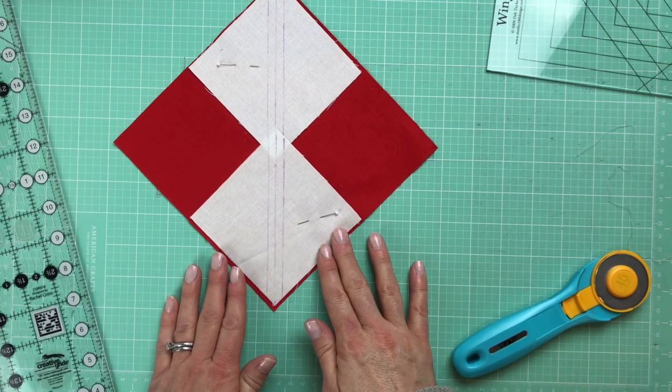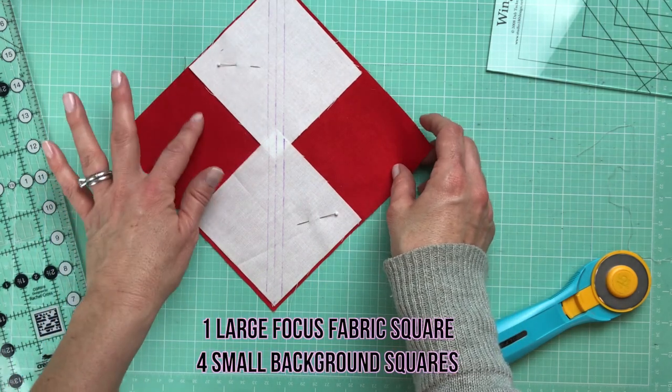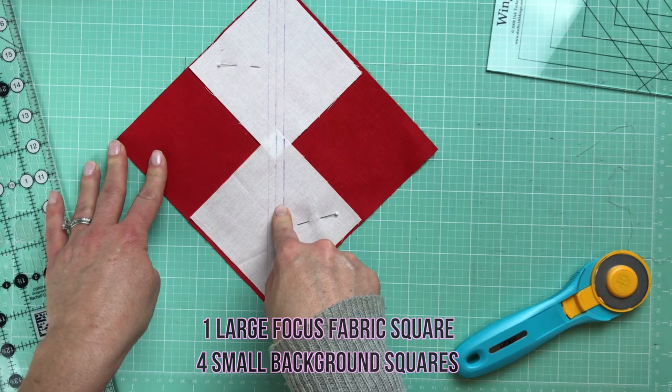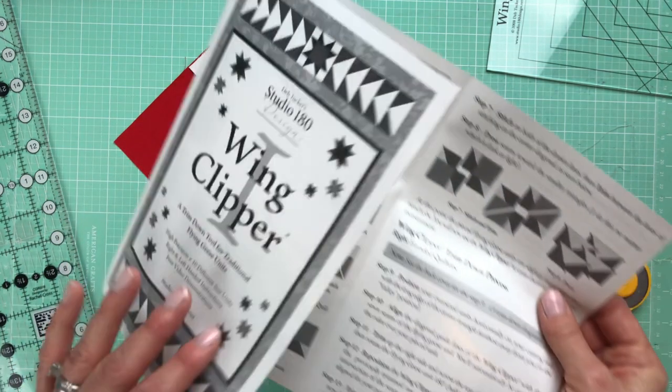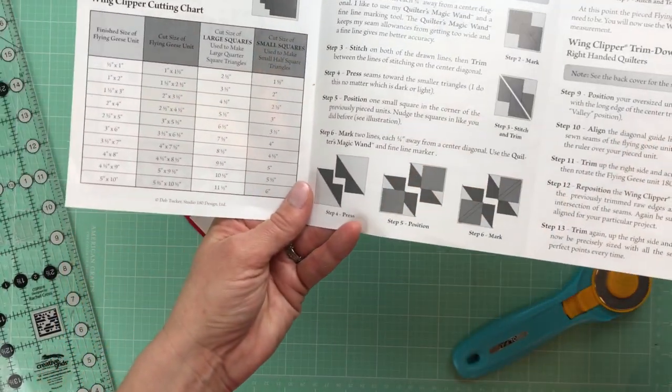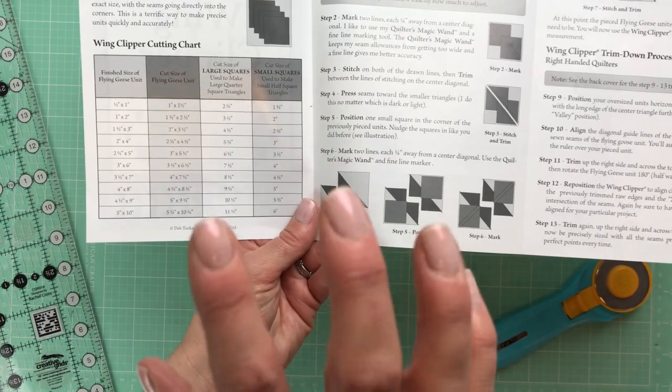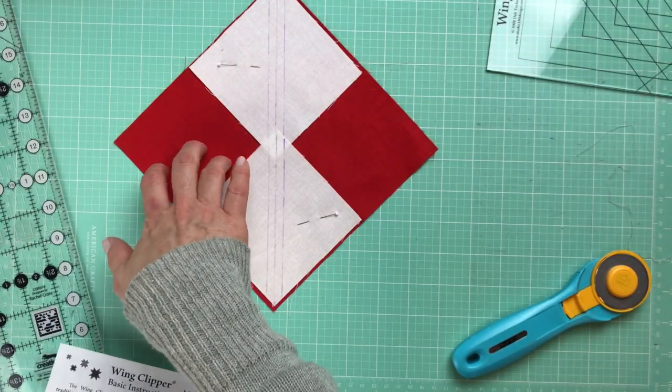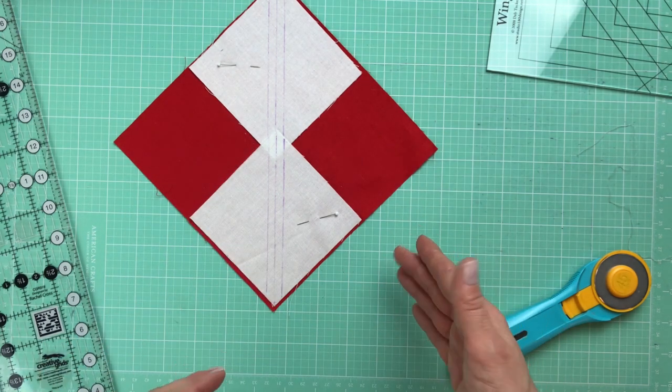To make the no waste, four at a time flying geese, you are going to need one large focus fabric square and four small background fabric squares. Take a look at the paper that came with your wing clipper, and it gives you a little chart that tells you exactly the size that these need to be. Pay attention because I've noticed that for the large square with the wing clipper method, they've sized up their squares a quarter of an inch larger than the traditional four at a time method.